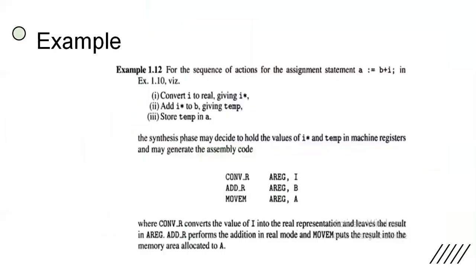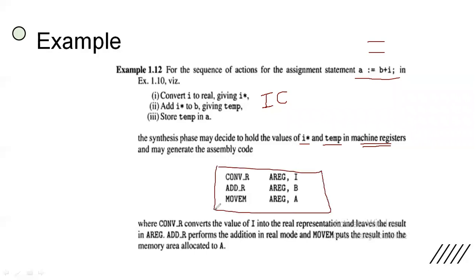Here is the code generation example using the same expression a = b + i from throughout this lecture, where i is integer and b and a are real. The intermediate code (IC) has three steps: convert i to real giving i*, add i* to b giving temp, and store temp in a. The synthesis phase decides to hold i* and temp in machine registers, so no memory allocation is needed for them.